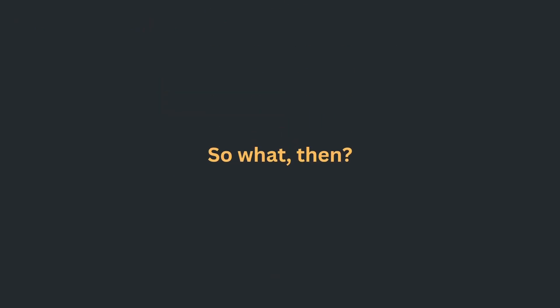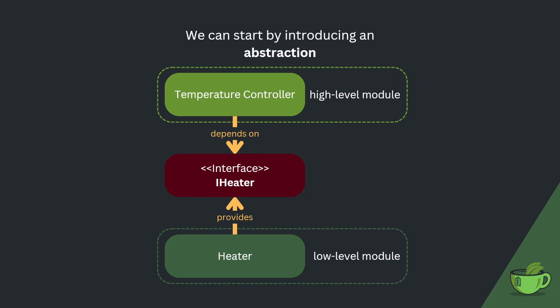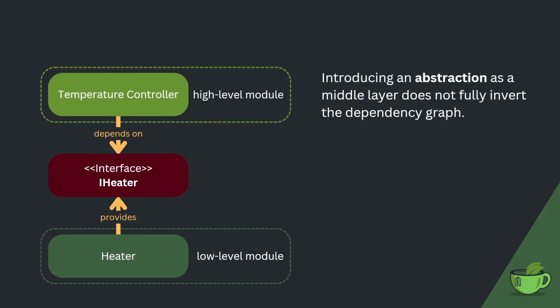What can we do then? We could start by introducing an abstraction between the high and the low-level module. In this case, I chose an interface — it is the core element of this video series after all — but you could use an abstract base class as well. Interfaces are typically the more common abstraction to use here. Introducing this abstraction of the heater has inverted half of the dependency, i.e. the heater implementation now has an upwards dependency, as it needs to provide the interface.